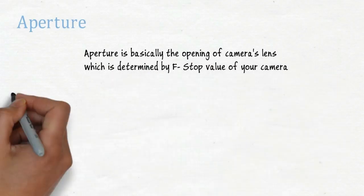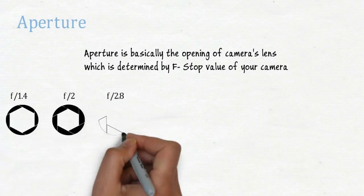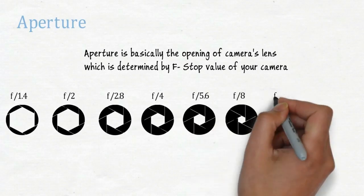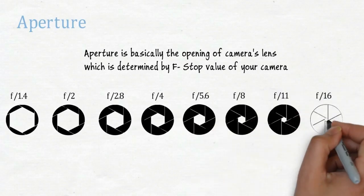The following diagram shows the different f-stop value on your camera. When it comes to aperture, the smaller number has the bigger aperture, and the bigger number has the smaller aperture.